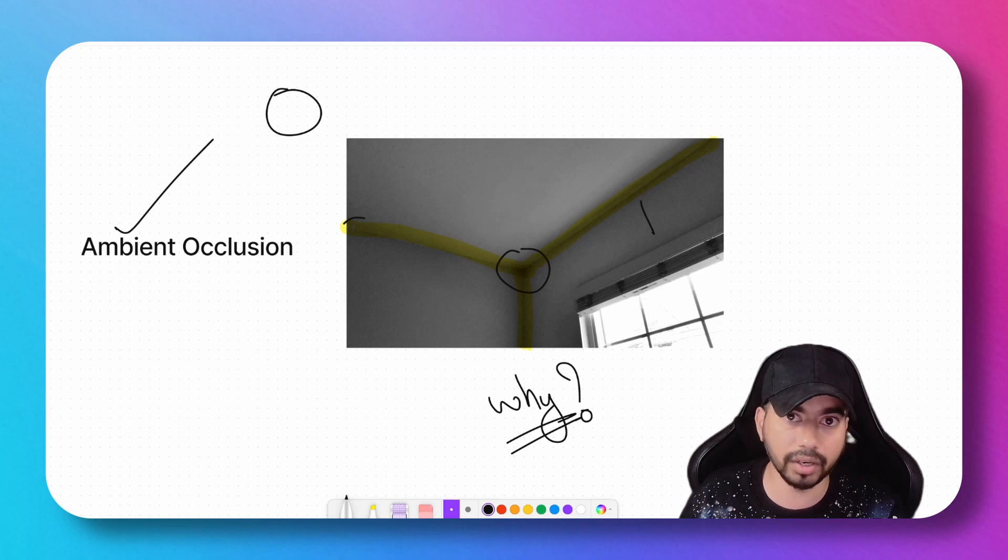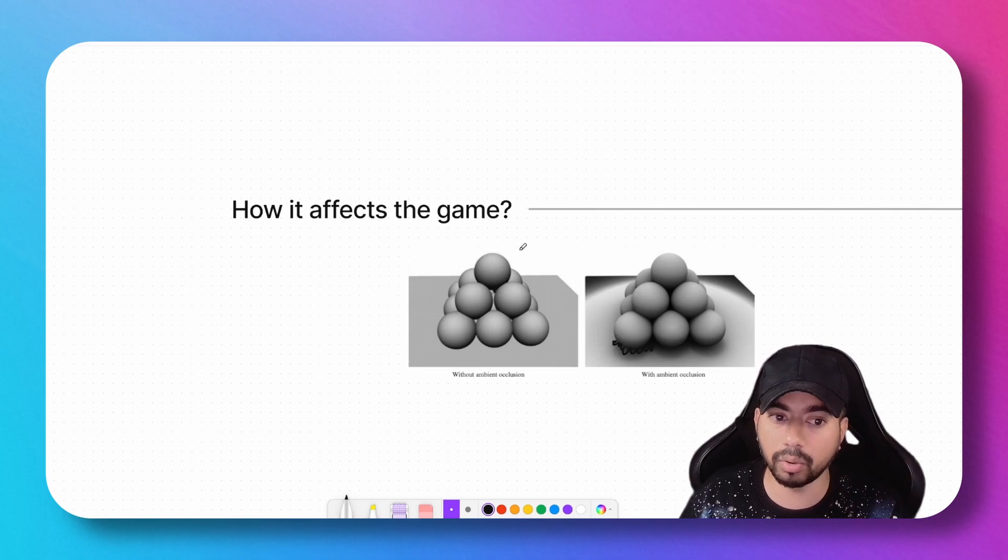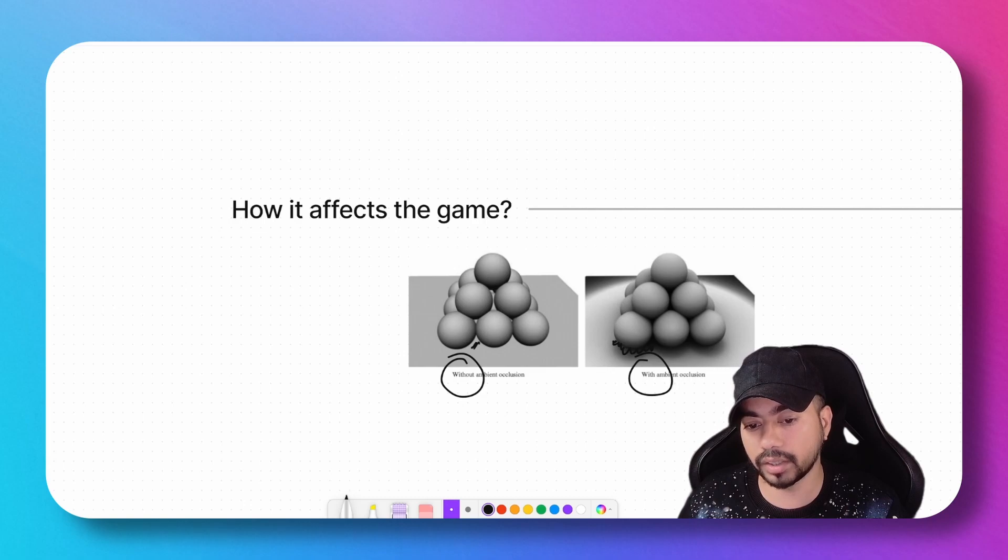We understand what ambient occlusion is and why it happens. Now let's understand how ambient occlusion affects the game. Let's compare two scenes: this scene is without ambient occlusion, and this particular scene is with ambient occlusion. If you observe the areas in the bottom, you would see that the color of these areas is the same as this.